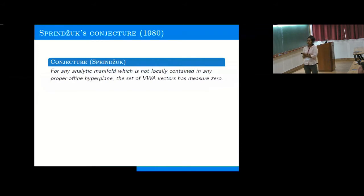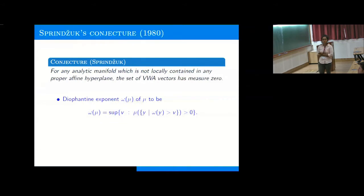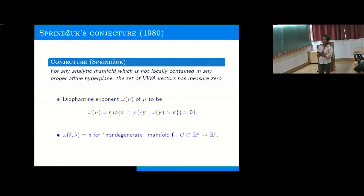Sprindžuk conjectured in 1980 that if you take any analytic manifold which is not locally contained inside any proper hyperplane, then the set of very well approximable vectors will have measure zero. Before going further, I want to recall the definition of the Diophantine exponent of a measure. It is just the essential supremum of omega(y) with respect to the measure. In terms of this exponent, Sprindžuk's conjecture can be stated as: omega(f_* lambda) = n for such non-degenerate manifolds.